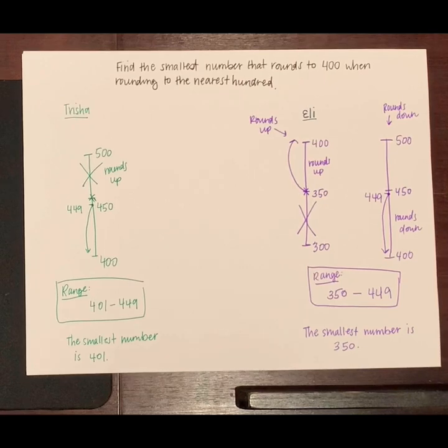Let's take a look at the student work of two of my students who were solving workshop problem number two. Find the smallest number that rounds to 400 when rounding to the nearest hundred.